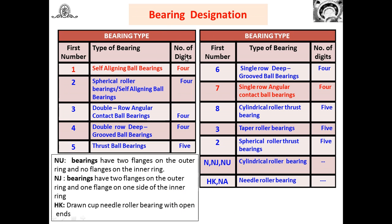Here are more bearing type codes: 1 means self-aligning ball bearing; 2 is spherical roller bearing; 3 is double row angular contact or double row deep groove ball bearing (4 digits); 5 is thrust ball bearing; 6 is single row deep groove ball bearing (4 digits); 7 is single row angular contact bearing (4 digits); 8 is cylindrical roller thrust bearing (5 digits); 30 is taper roller bearing. NU designates bearings with 2 flanges on the outer ring and none on the inner ring. NJ has 2 flanges on the outer ring and 1 flange on one side of the inner ring. HK means drawn cup needle roller bearing with open ends.